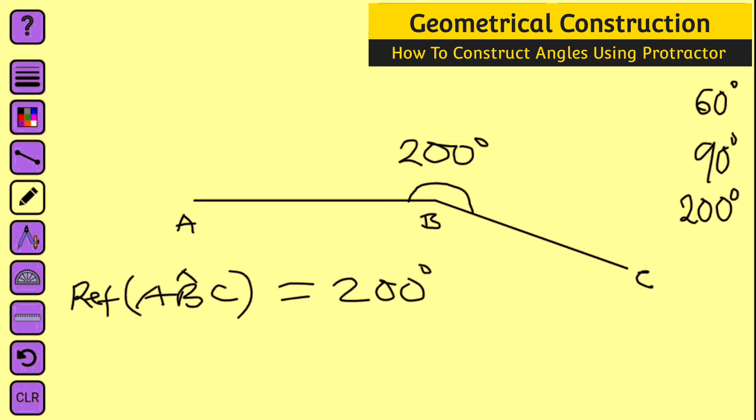Because if you say angle ABC, you are referring to this smaller angle right here. But we just constructed the external angle which is reflex to angle ABC. And this is exactly how to construct angles using a protractor. Thank you for watching — do have a nice day.